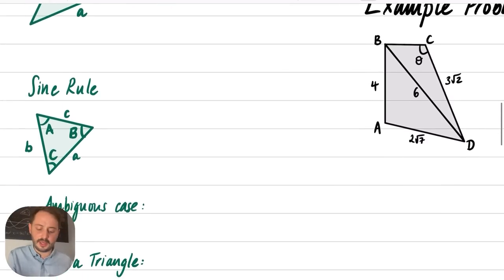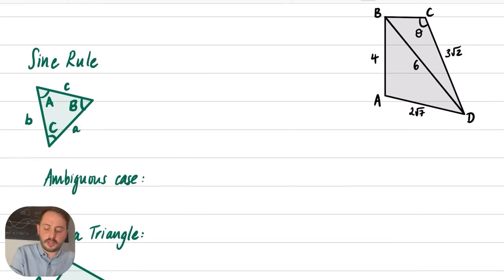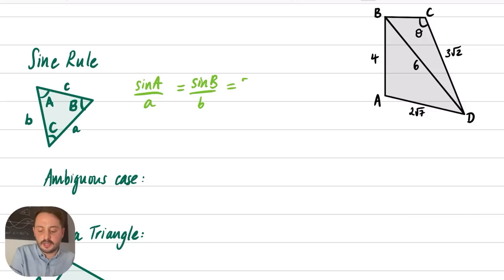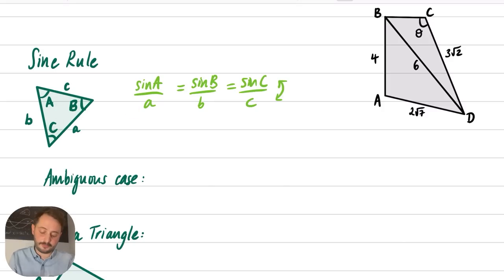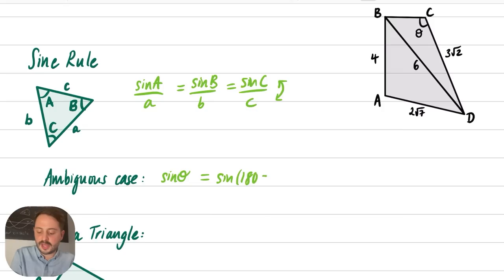The sine rule is also from GCSE but has an extra feature — the ambiguous case. Angles are capital letters and opposite sides are lowercase. The sine rule says sin A / a = sin B / b = sin C / c, and there's a flipped version too. You typically use just a pair of these. The ambiguous case means that if you solve and find angle theta, there's a second solution: 180 minus theta. This will come up in our example later.